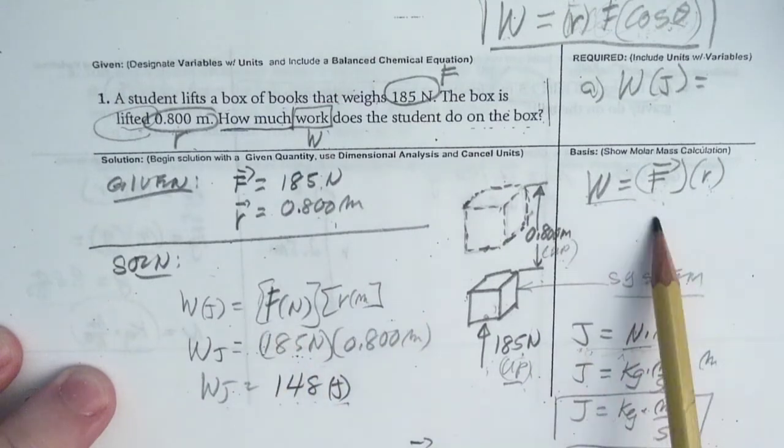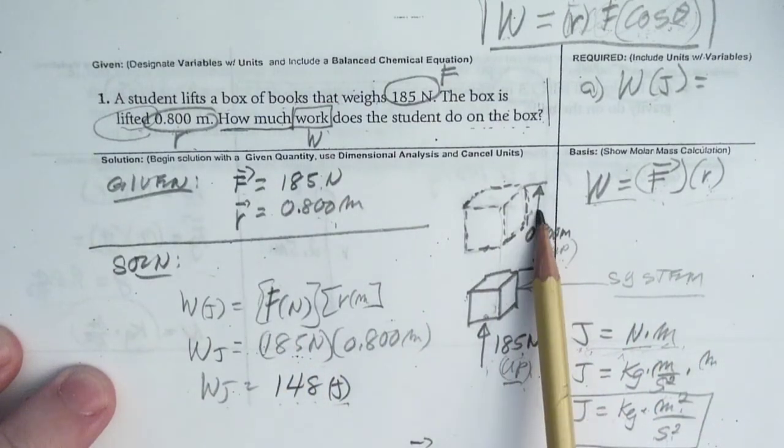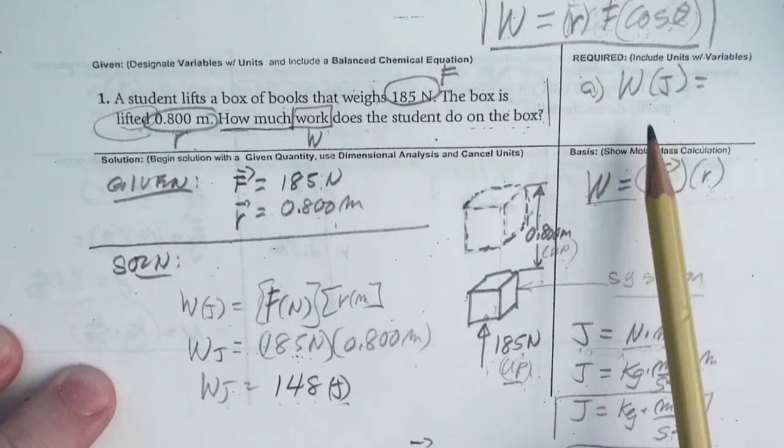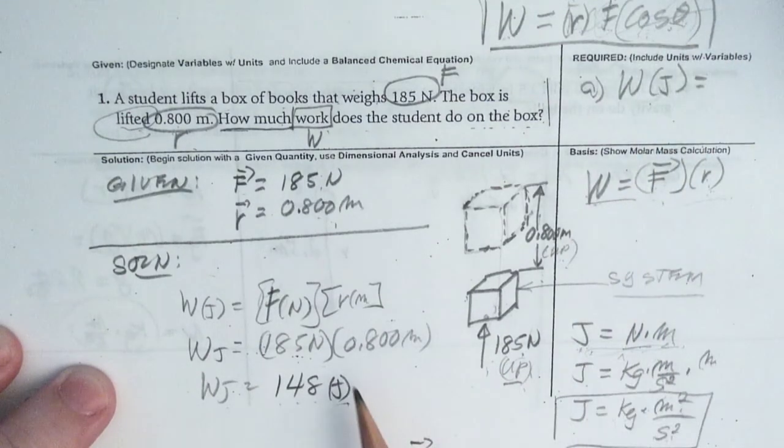All you have to do is put the basic formula. Since they're both going up, the cosine of the angle is zero.